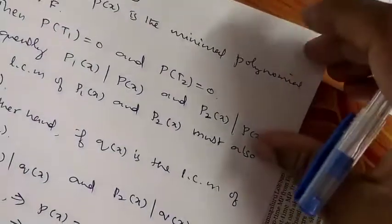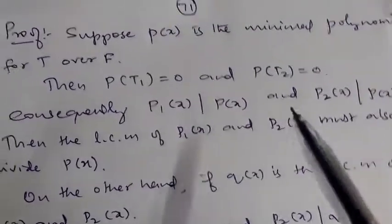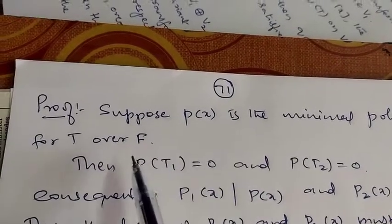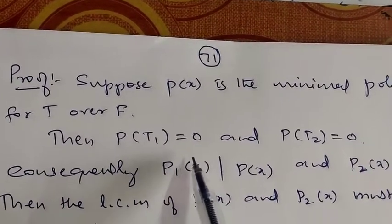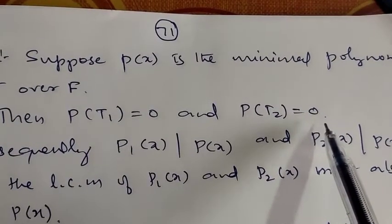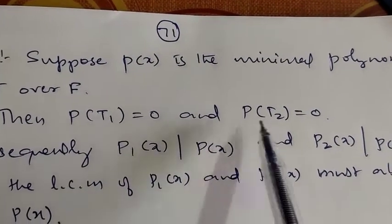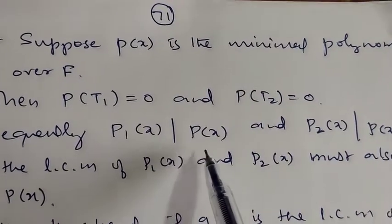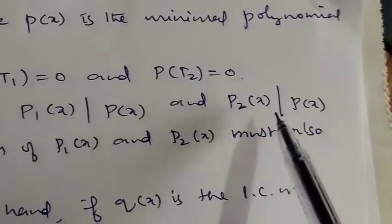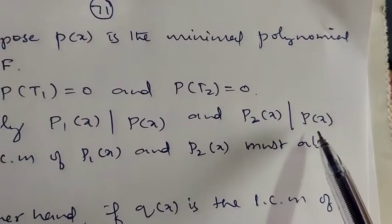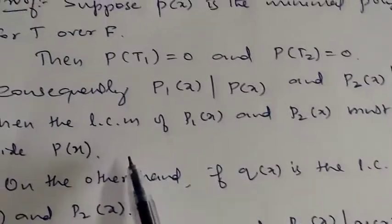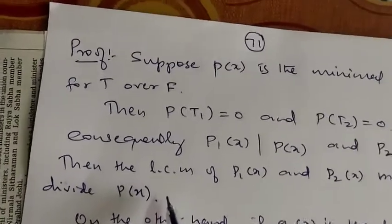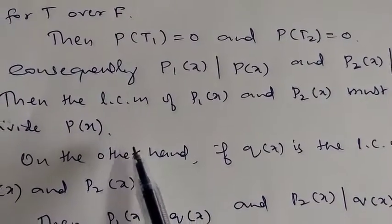Let us prove this. Suppose P(x) is the minimal polynomial of T over F, so P(T) = 0. Then P(T1) = 0 and P(T2) = 0. Consequently, P1(x) divides P(x) and P2(x) also divides P(x), which means the LCM of P1(x) and P2(x) also divides P(x).